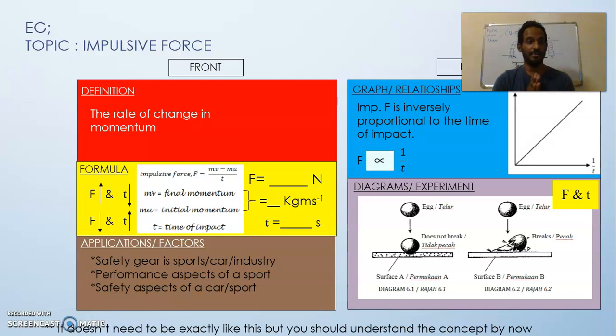For example, I got another topic here: impulsive force. So I basically got the definition: impulsive force is the rate of change in momentum of a system. And then you got the formula right there, F equals (mv minus mu) over t. Like I said, each of the quantities should have their units. And then from that formula you are able to relate the impulsive force at the time of impact. And then you got the applications: the safety gear in sports, car industry, performance aspects of a sport, safety aspects of a sport.